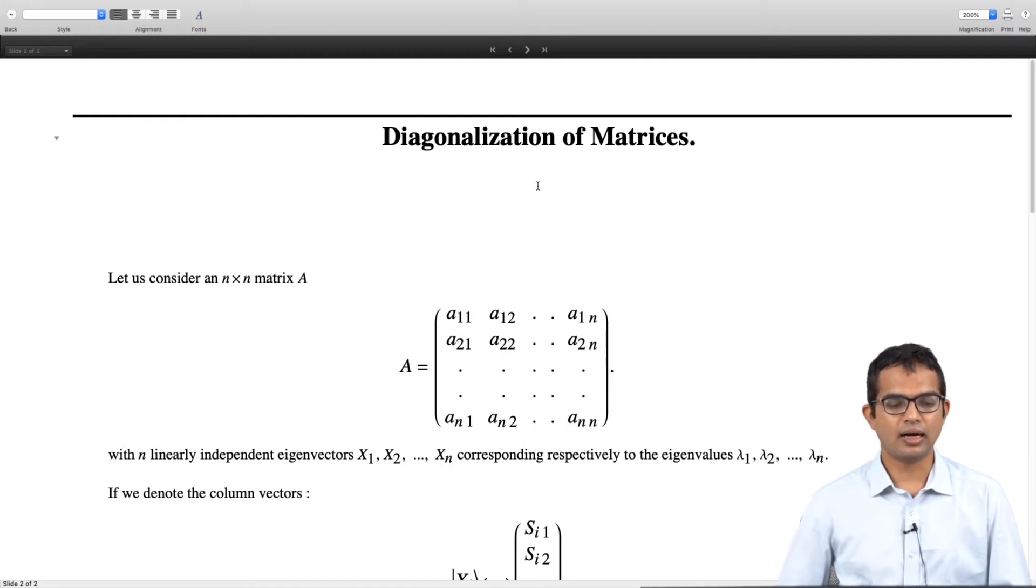So, I am looking at a matrix which has n linearly independent eigenvectors. I am not saying it is linearly independent column vectors. That is a different concept. I am talking about a matrix with n linearly independent eigenvectors.